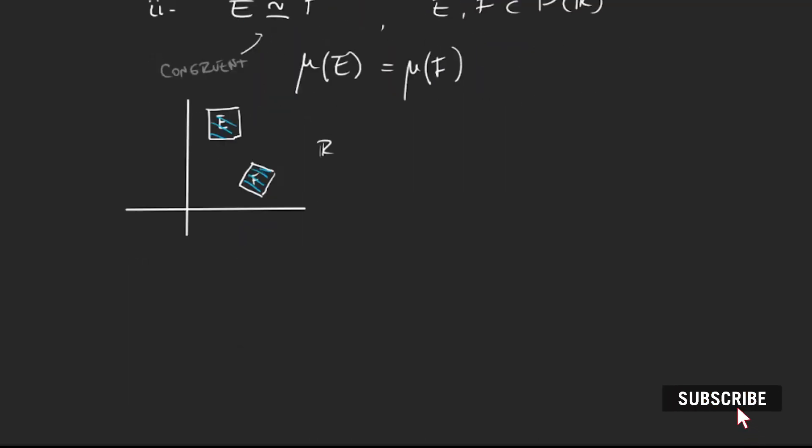And last but not least, the third property I want this function μ to satisfy is that if Q is the interval [0,1), let's open it at one of the extremes but it's the same, then I want μ of Q to measure one. It's pretty logical, I want the unit interval to measure one.